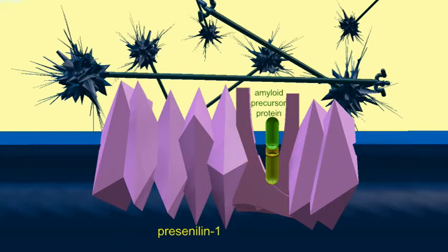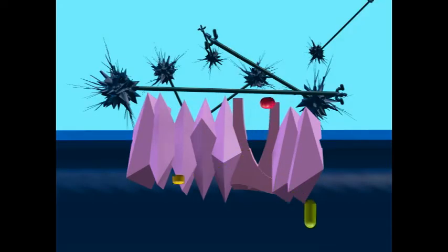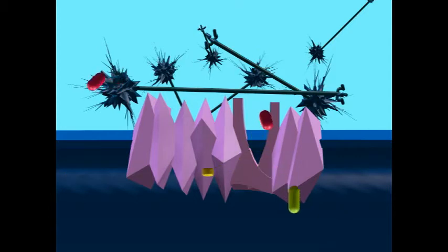However, the mutant form of presenilin-1 cleaves the amyloid precursor protein in an abnormal fashion. An abnormal peptide is produced, 42 amino acids long instead of 40.